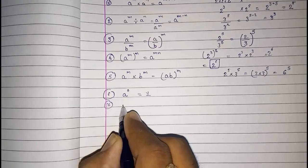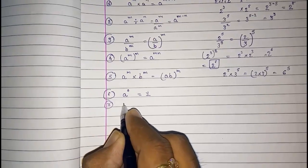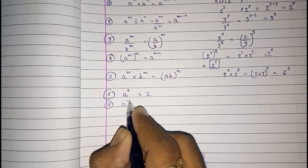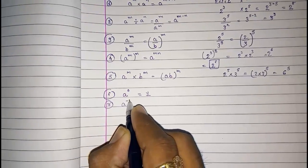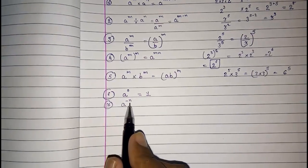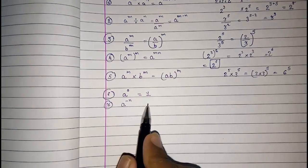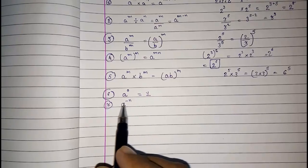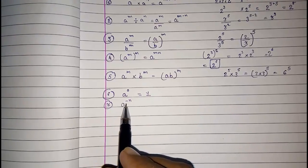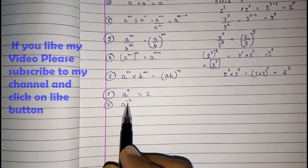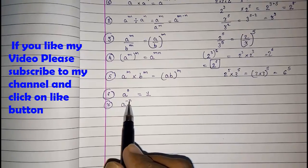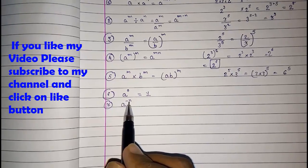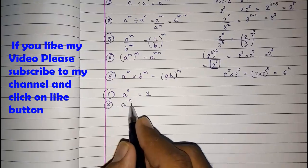The seventh law covers negative powers — a raised to minus n. You cannot express a negative power as it is, so you need to remove the negative. When a negative power is in the numerator, you take it to the denominator to make the power positive.